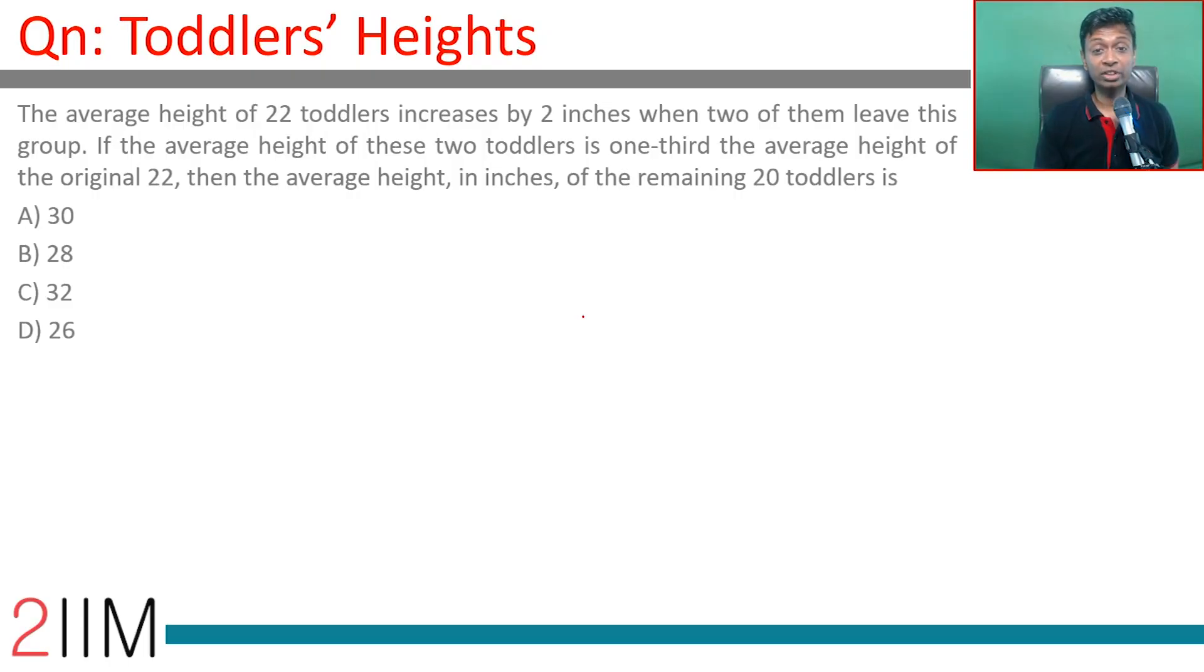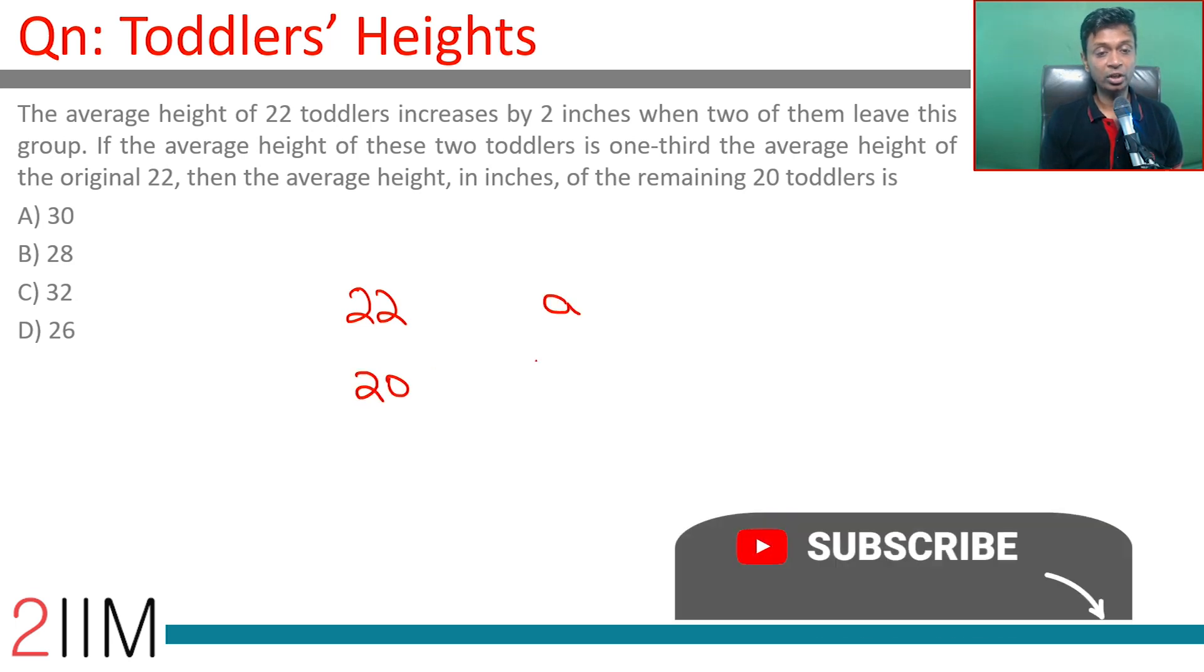The average height of 22 toddlers increases by 2 inches when two of them leave this group. Let's say 22 toddlers have average a, and when 2 leave, the 20 toddlers' average becomes a plus 2.